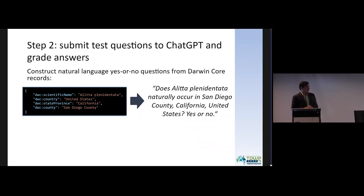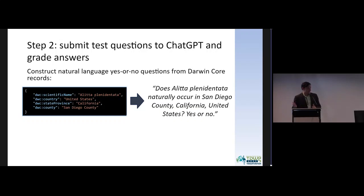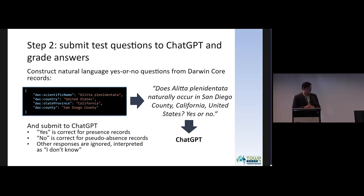The second step was to turn this test set into questions, submit them to ChatGPT, and grade its responses. ChatGPT needs natural language prompts, so we took each record — a scientific name plus location consisting of country, state, province, and county — and turned it into a question: does the species naturally occur at this location? Yes or no. If it says yes for a presence record, it's correct; if it says no for an absence record, it's correct. Any other responses — because it doesn't always want to say yes or no — we interpret as it not knowing.